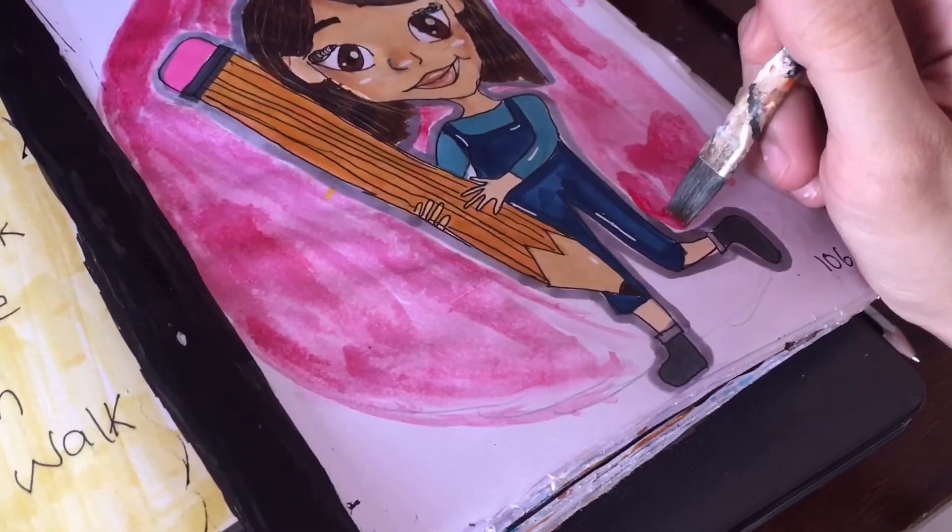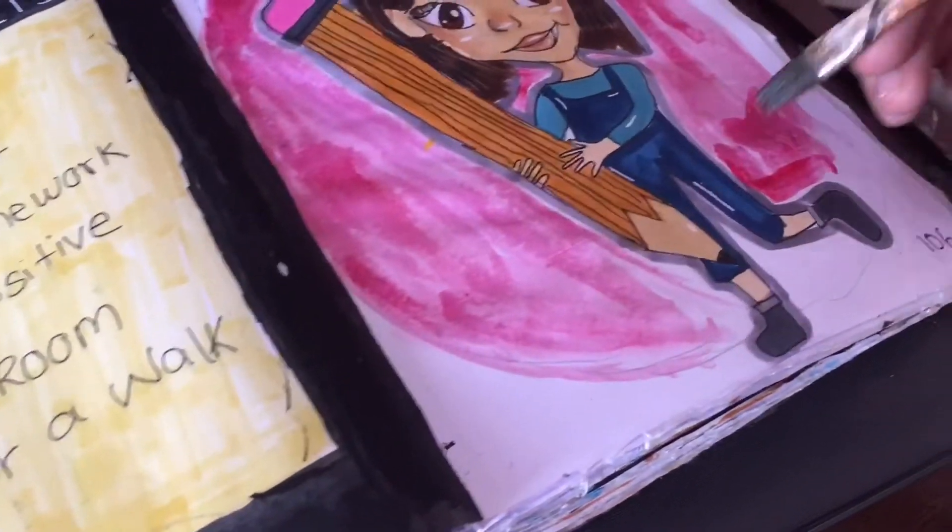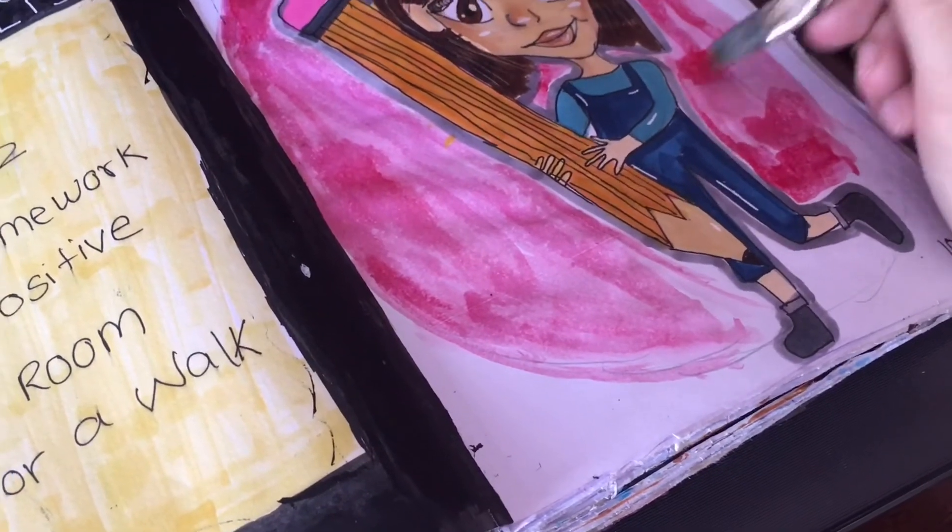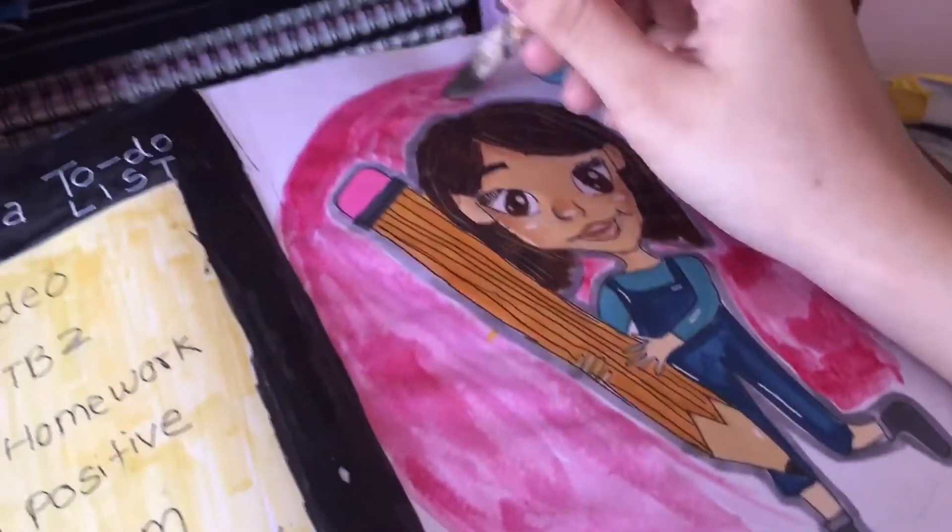And since the page was looking really empty I decided to draw this large circle around the girl and I painted that in some red watercolor just to kind of finish it up. And here's the final page.